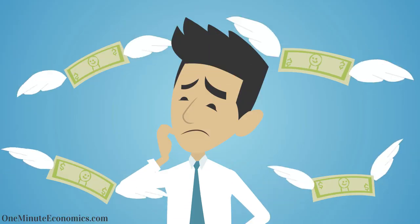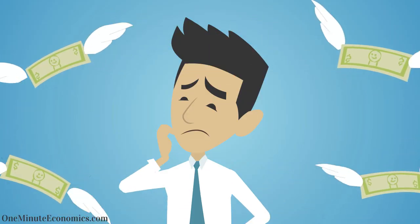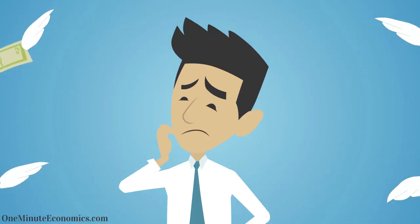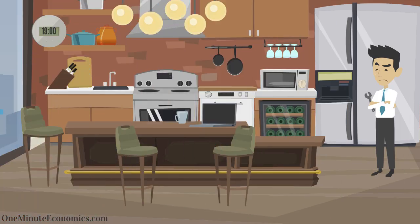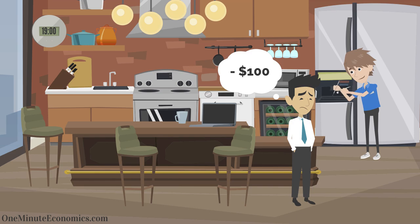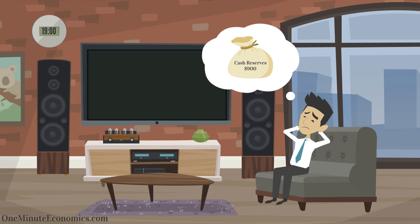Furthermore, it's important to note that stocks can be depleted or accumulate. For example, John's refrigerator malfunctions and at 7 pm the same day, he takes a hundred dollars from his cash reserves to pay someone to fix it. If we took a snapshot of his cash reserves bag at 7 pm, the value would have been $900.